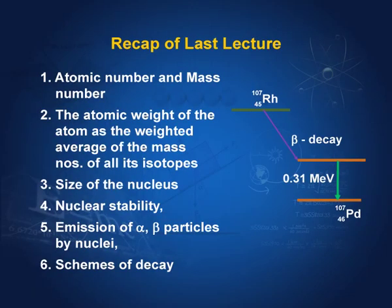Then we discussed some schemes of decay. For example, rhodium-107 decays by emitting a beta particle and leaves the daughter nucleus in an excited state. Then the nucleus comes down to the ground state by emitting a gamma particle. So that is what we did last time.